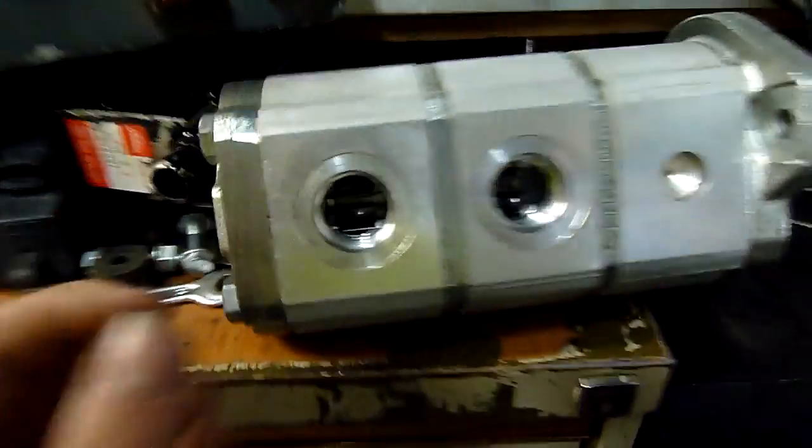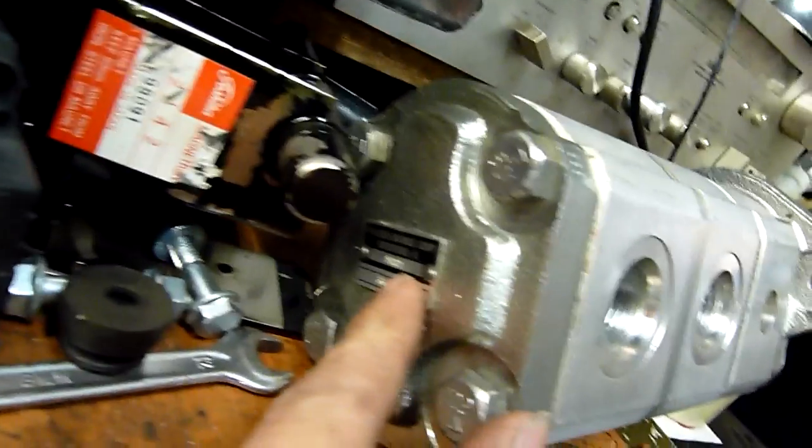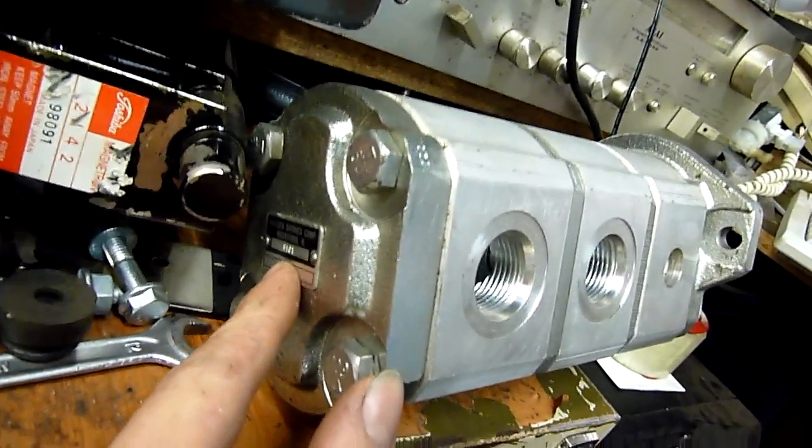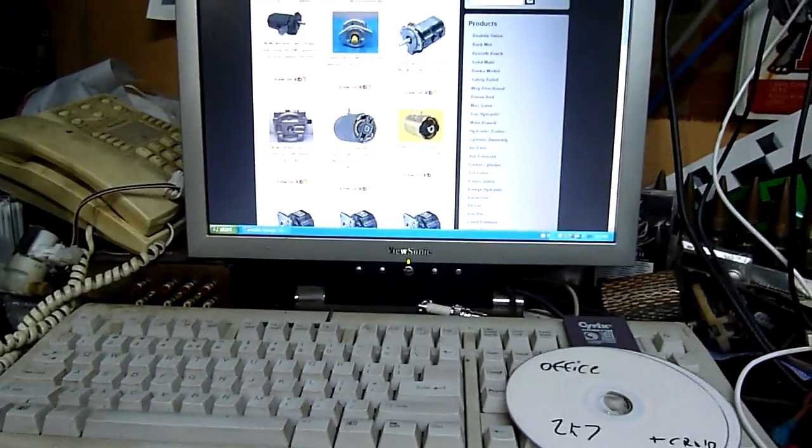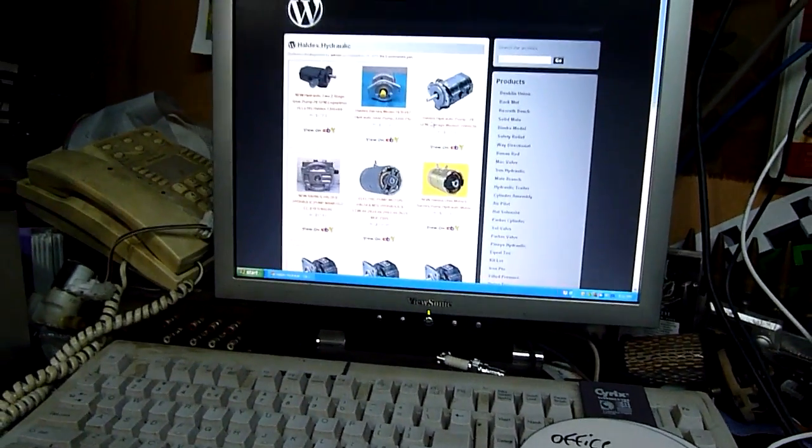It's made by Haldex Barnes Rockford Illinois, part number 8101, but I haven't been able to find anything on the internet about it. There are other references to different part numbers and different two-stage pumps, but this seems to be almost three stage or a two-stage with a separate third attachment.